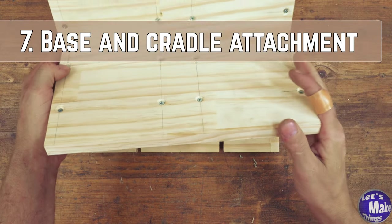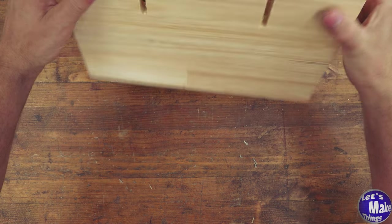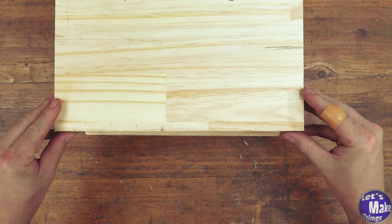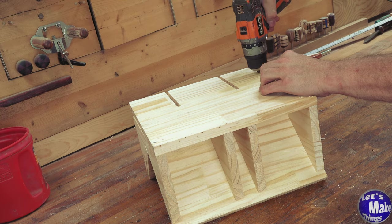Now we're going to attach the cradle to the base. Take my bar off, flip it over. Once again, drill and add screws. You probably don't have to add a lot either.